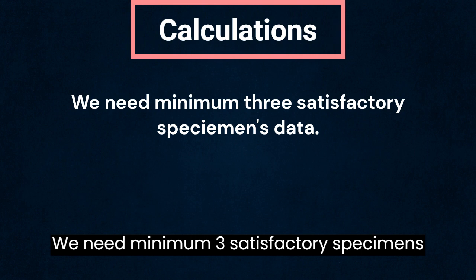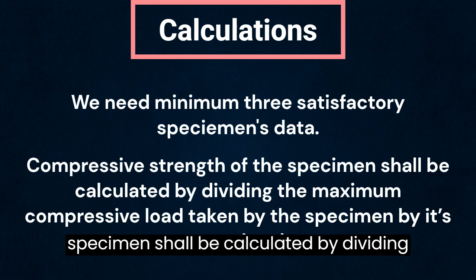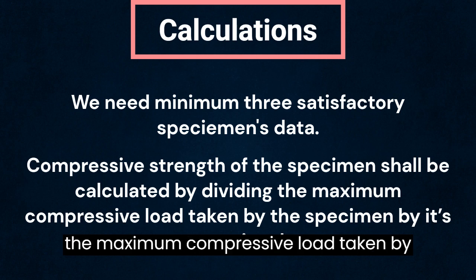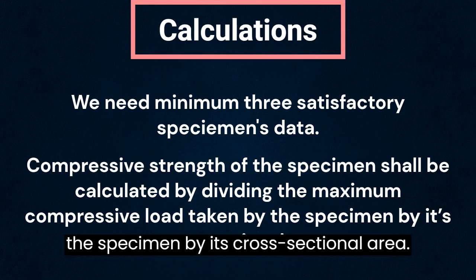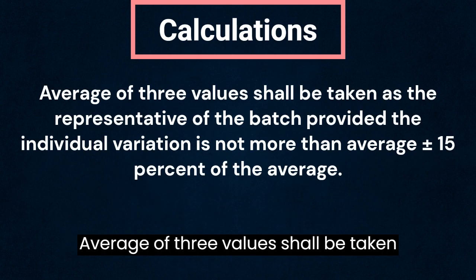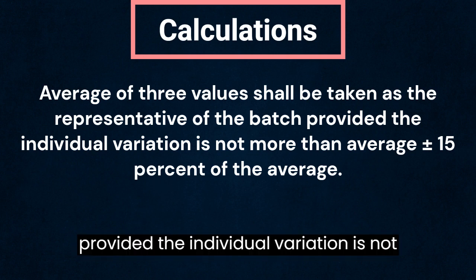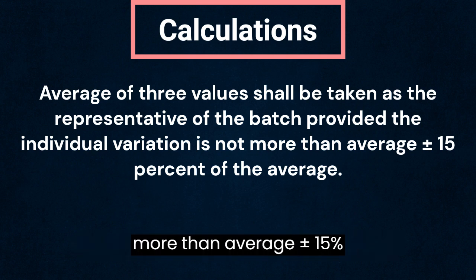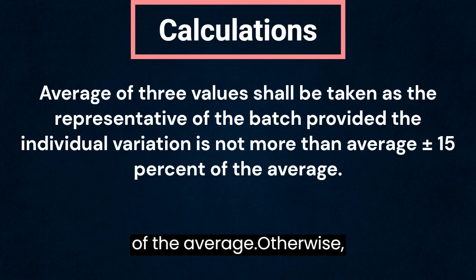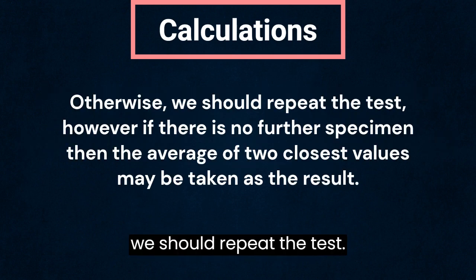We need a minimum of 3 satisfactory specimens' data. Compressive strength of the specimen shall be calculated by dividing the maximum compressive load taken by the specimen by its cross-sectional area. The average of 3 values shall be taken as representative of the batch, provided the individual variation is not more than average plus or minus 15% of the average. Otherwise, we should repeat the test.